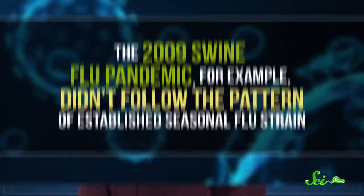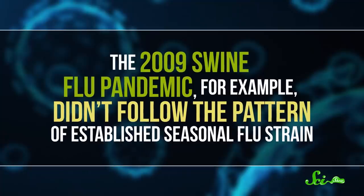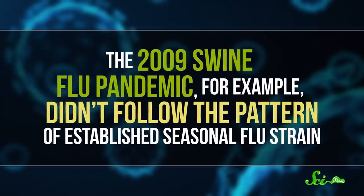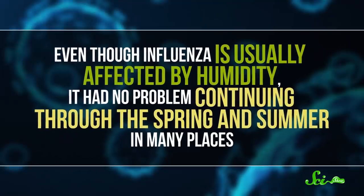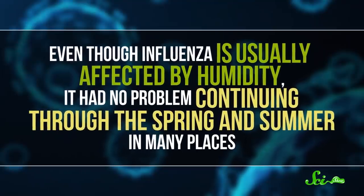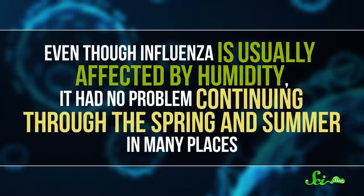Over the years, we've seen this play out with flu pandemics. One key difference between seasonal and pandemic flu is that question of how many people are susceptible. The 2009 swine flu pandemic, for example, didn't follow the pattern of established seasonal flu strain, even though influenza is usually affected by humidity. It had no problem continuing through the spring and summer in many places.